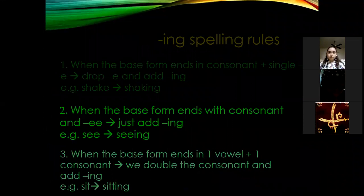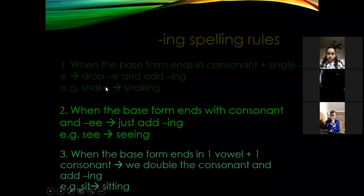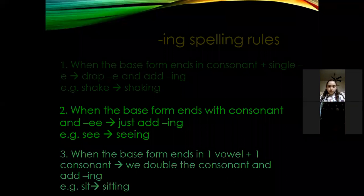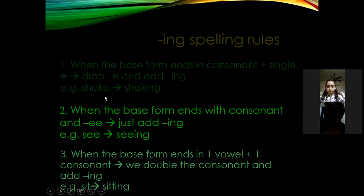In present continuous tense you must add -ing. Today we'll cover three rules for adding -ing. The first rule: look at the word 'shake.' It ends with a consonant plus a single 'e.' When I add -ing, I drop the 'e' and add -ing: shake → shaking. The rule is: when the base form ends in consonant plus single 'e,' drop the 'e' and add -ing.